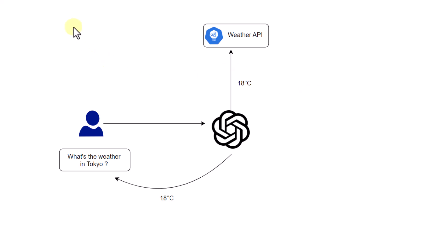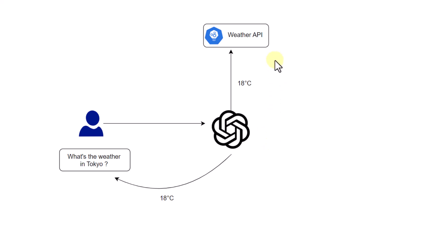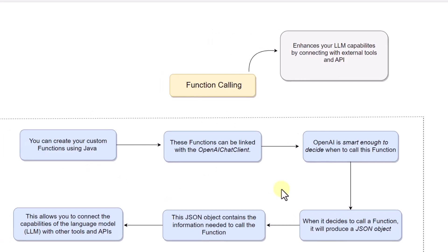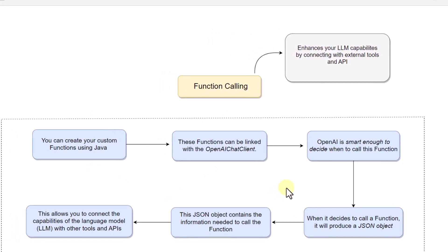In this video we are going to create a sample application to utilize function calling features. We are going to build a sample application to get the real-time temperature of a particular location. A user can ask for the weather of a city, pass the query to our Spring AI application, which will interact with an external API that returns the temperature to pass on to the user.